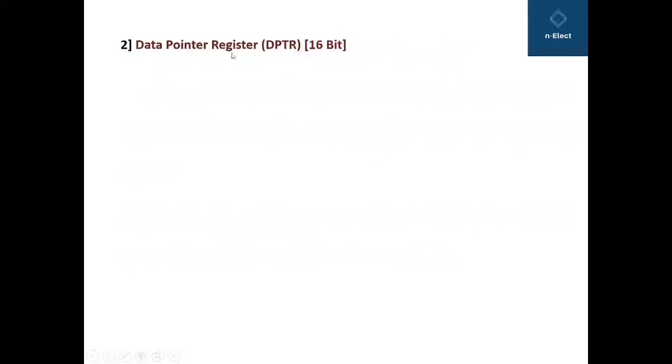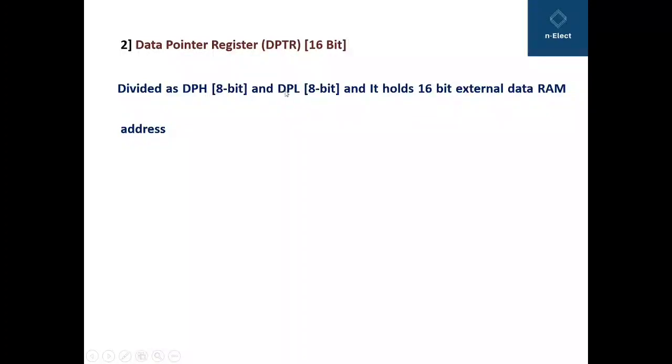The next register is data pointer register, which is written as DPTR register. It is a 16-bit wide register and it is further divided into higher byte and lower byte as DPH and DPL. DPH is higher byte of DPTR register, while DPL is the lower byte of DPTR register. Each of them are 8-bit wide. And the combination of DPH and DPL makes DPTR. What it does, it holds 16-bit external data RAM address.